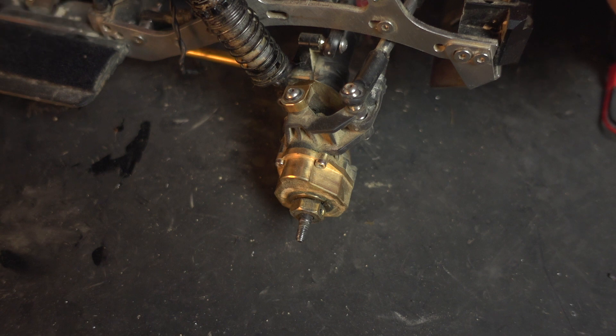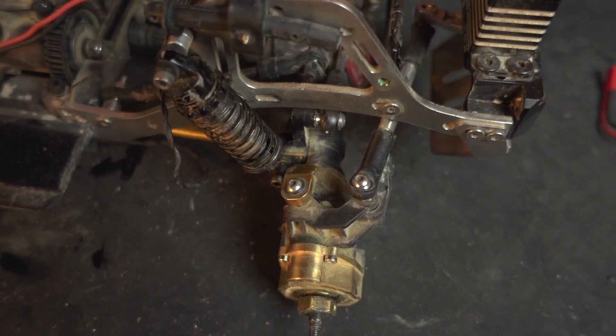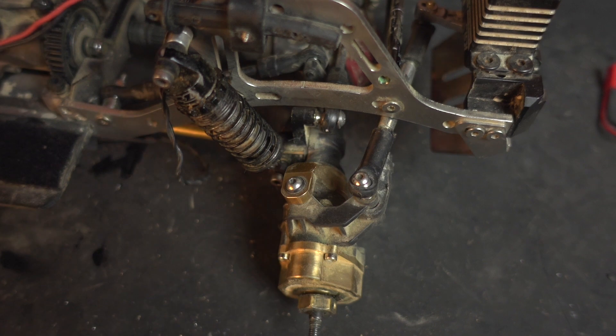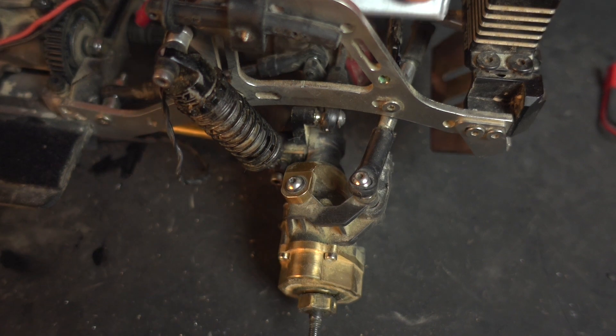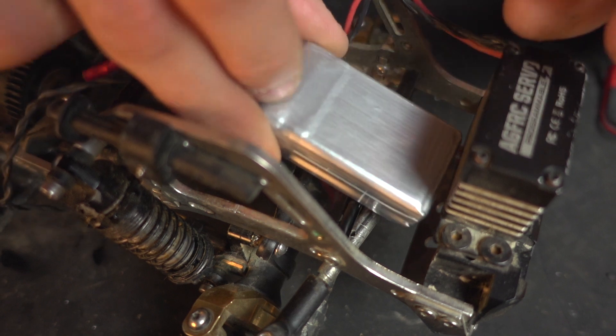And if I can get away with removing these C hubs that'll take away another 120 grams, so that's 200 grams. So all in all we're lopping 500 grams off this crawler which should make it super super light for a TRX4 based crawler.